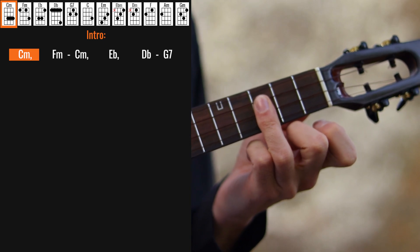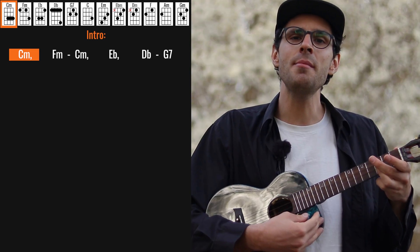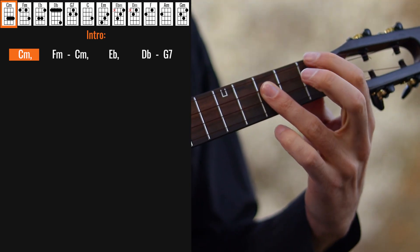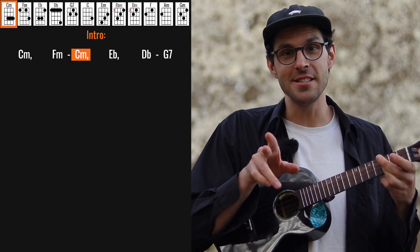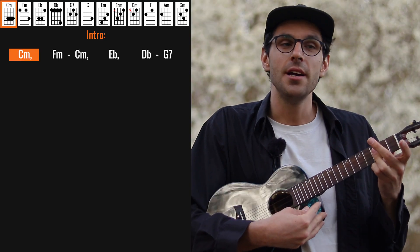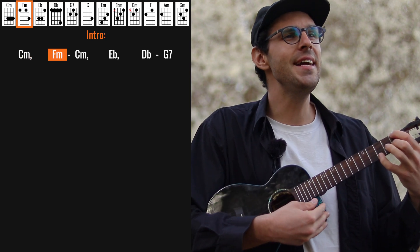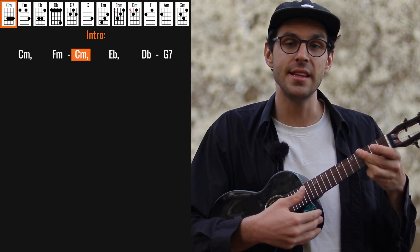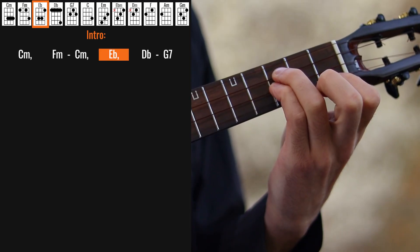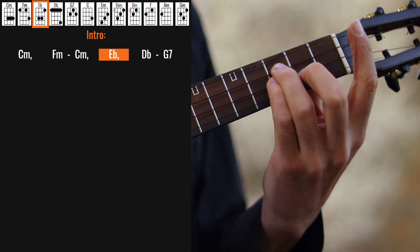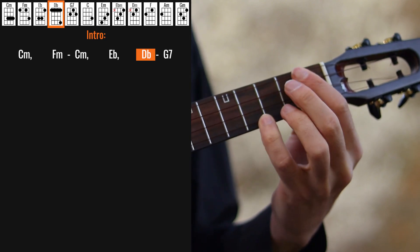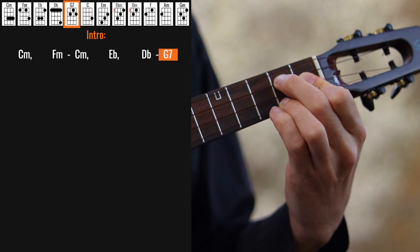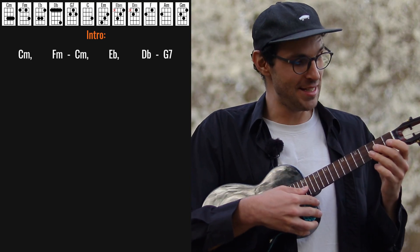The song starts, of course, with the intro which starts with C minor. You never know how much I... and then F minor. Back to C minor. F minor and C minor are splitting a bar here. So you never know how much I really love you. And then we go to E flat. You never know how much I... to D flat, really care, to G7.